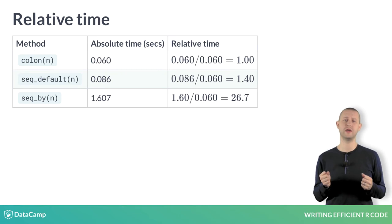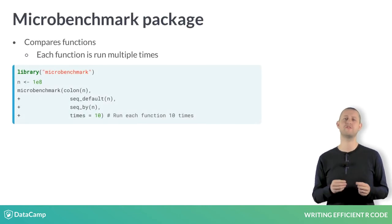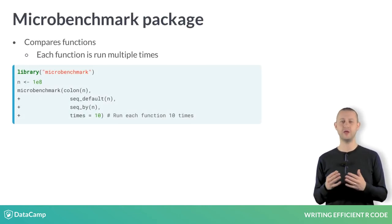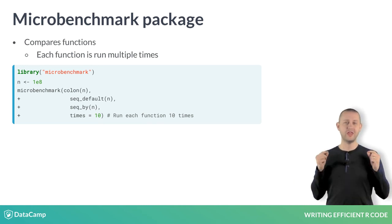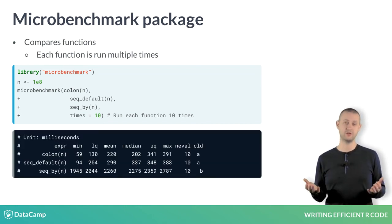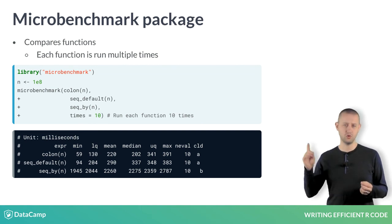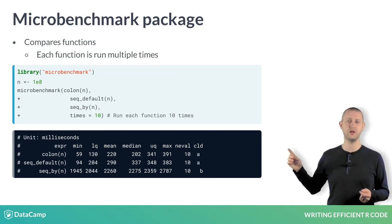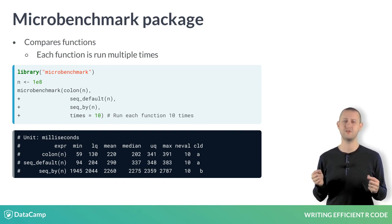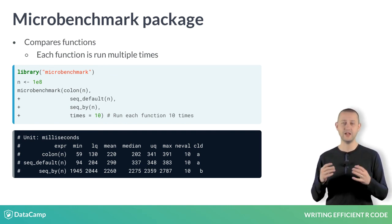The microbenchmark package is a wrapper around system.time and makes it straightforward when comparing multiple functions. The key function in this package is the unimaginatively named microbenchmark. In this code, we are comparing functions: colon, seq_default, and seq_by. The times argument specifies how many times we should call each function.